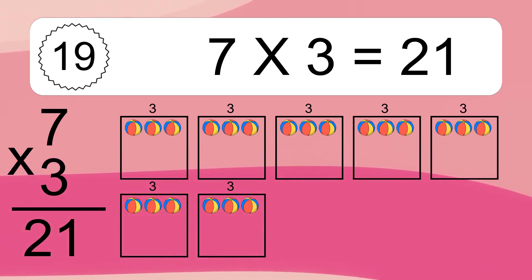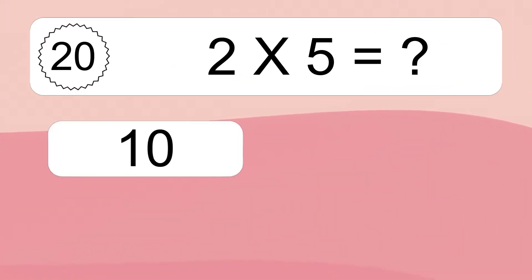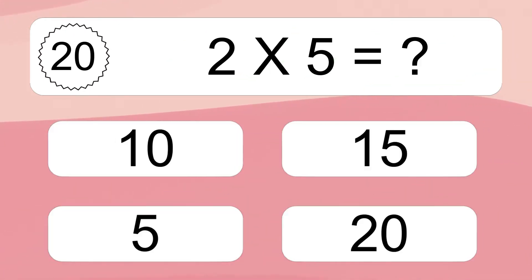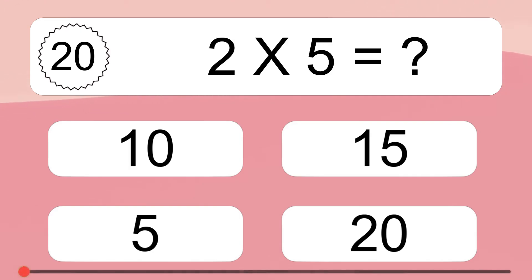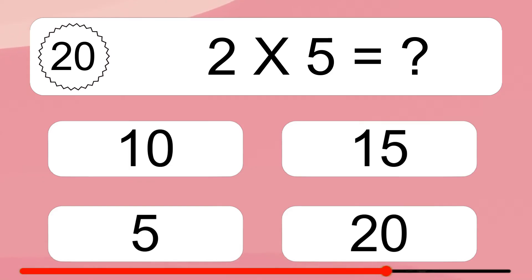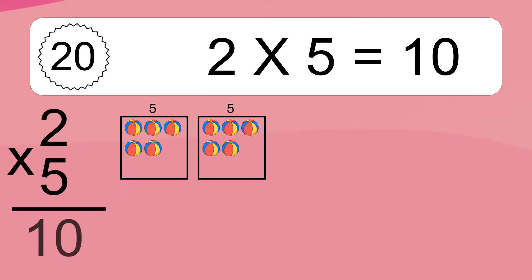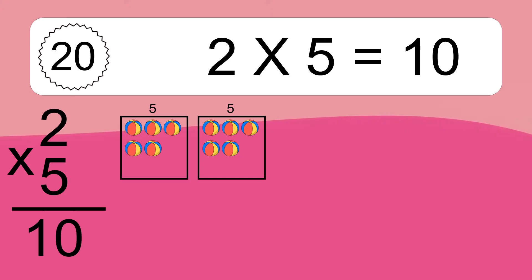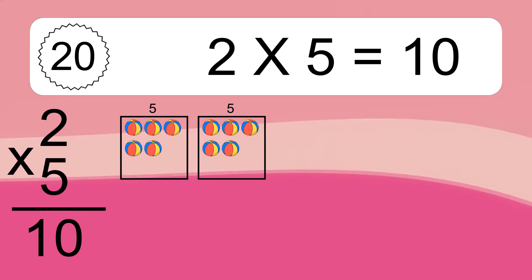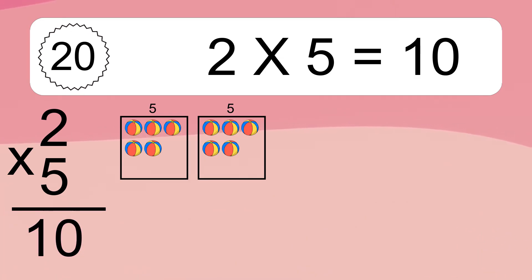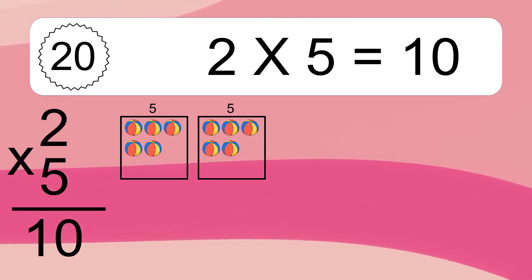This equals 21 balls. 2 times 5 equals what? 2 times 5 equals 10. You will have 2 times 5 balls. This equals 10 balls.